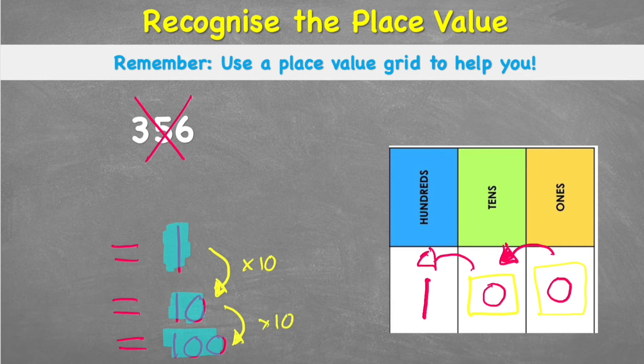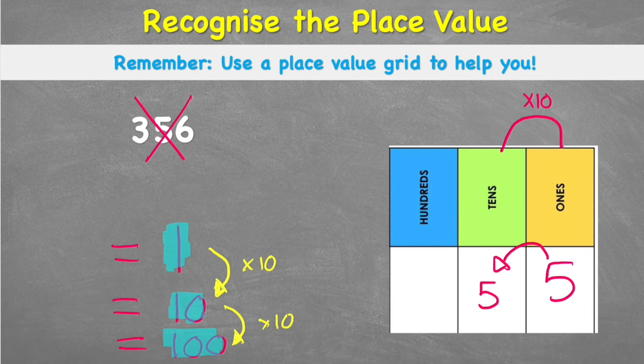And that's because every column on my place value chart is 10 times bigger than the last column. So anything in my 1s column, for example, if I put a 5, if I then move it into my 10s column, it has 10 times that value.